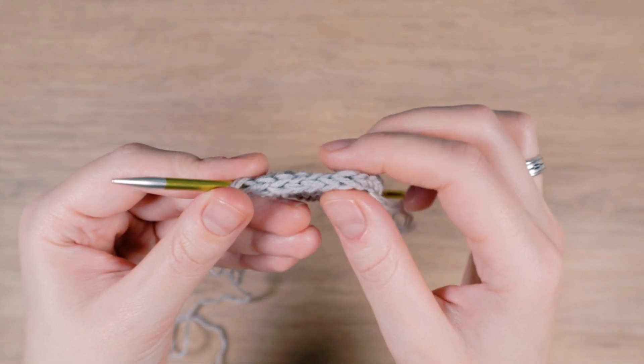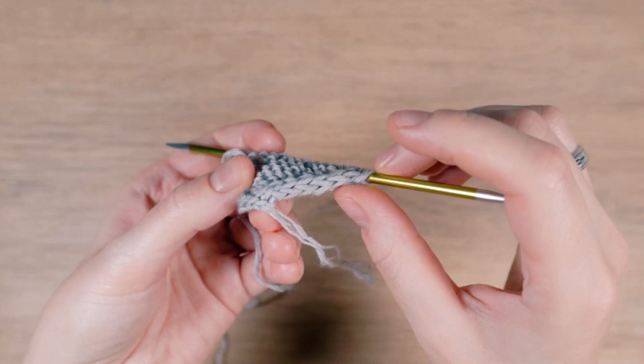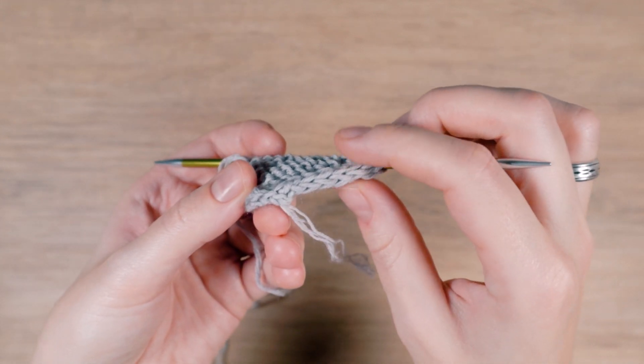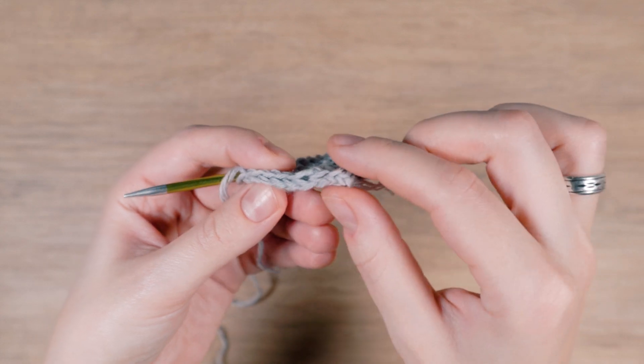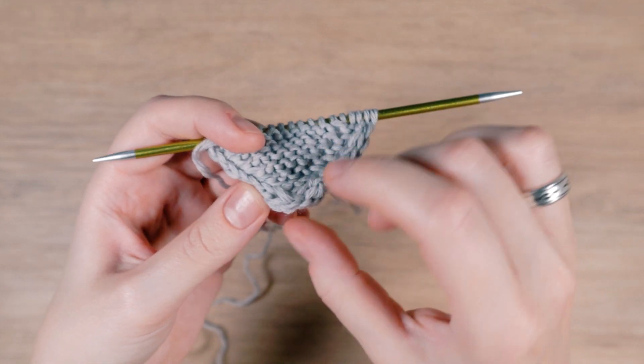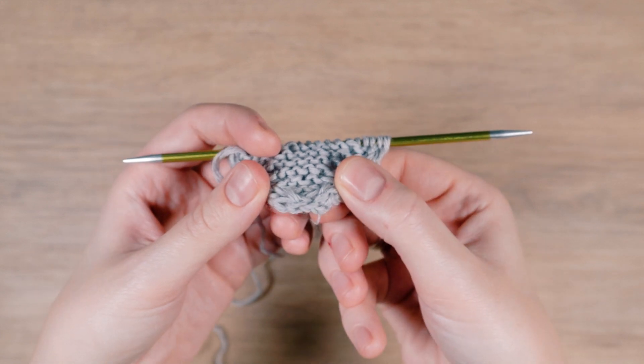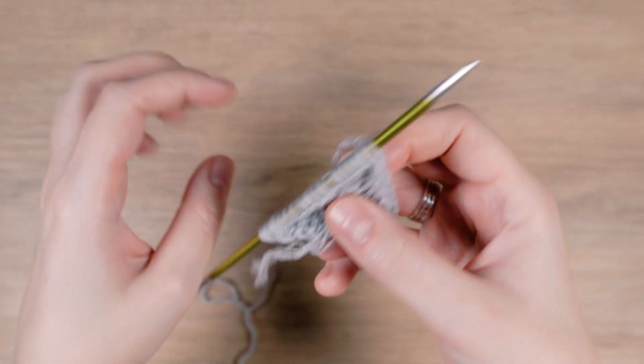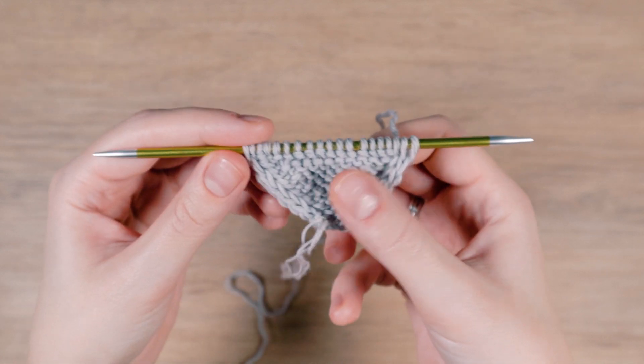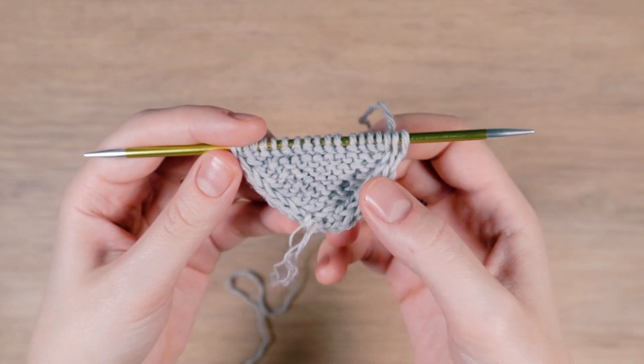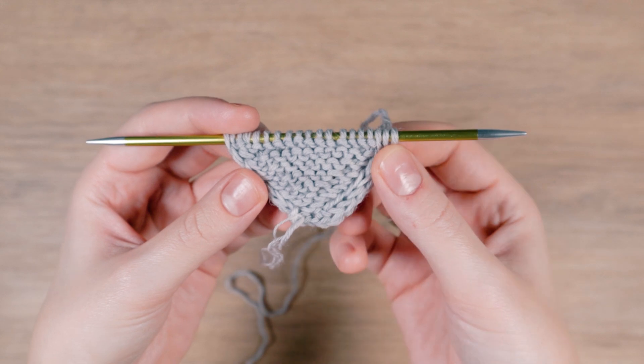This cast on can be used when you knit something with an I-cord edge. The cast on edge is this short piece at the bottom. As you can see I have I-cord edges on both sides and the cast on connects both I-cords so that we get a corner.